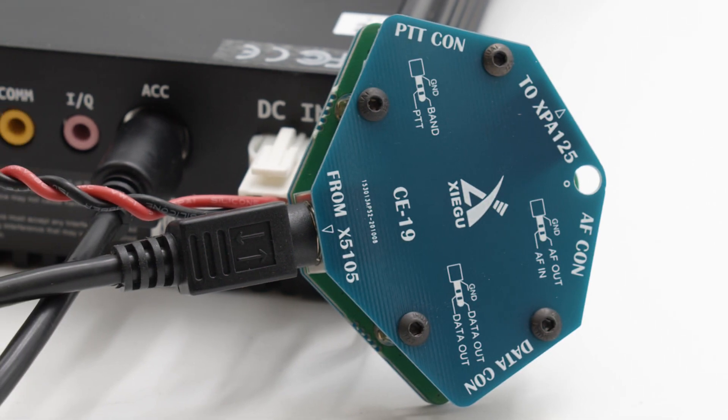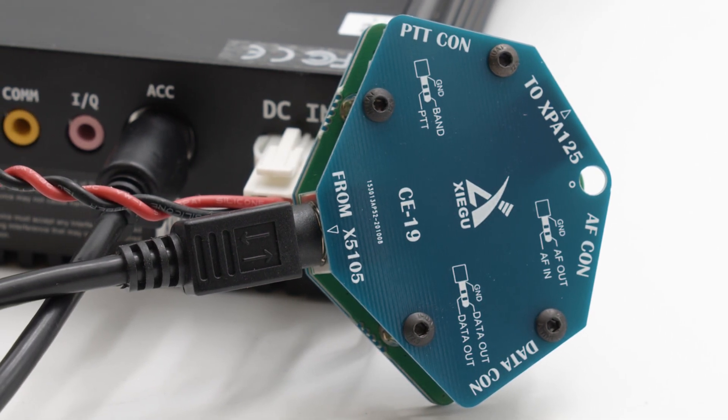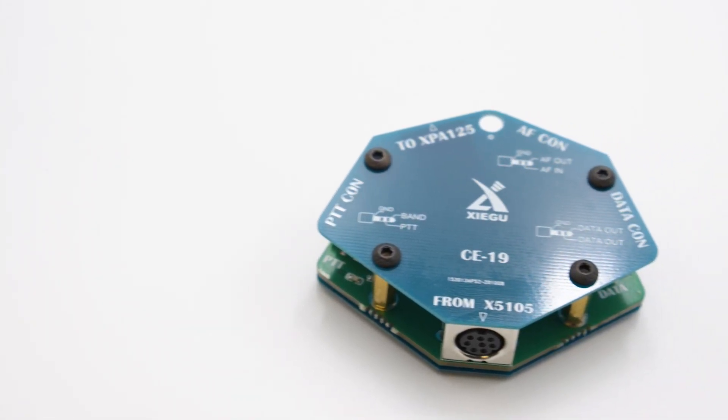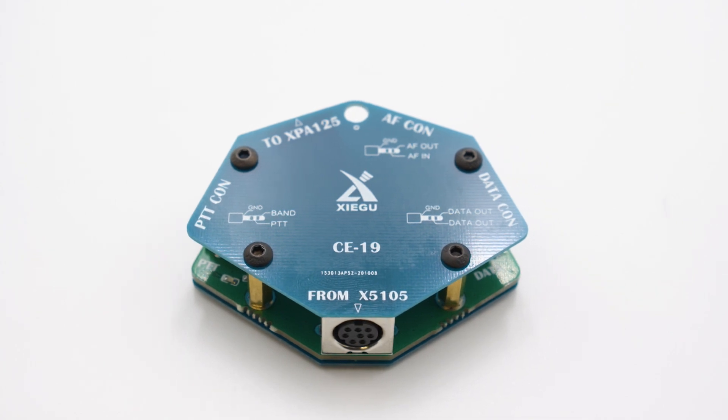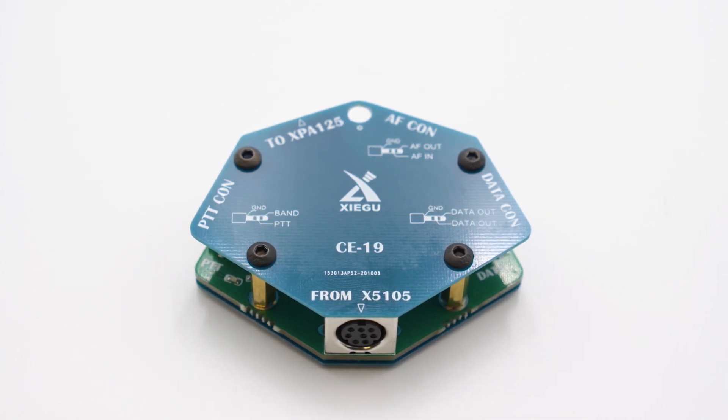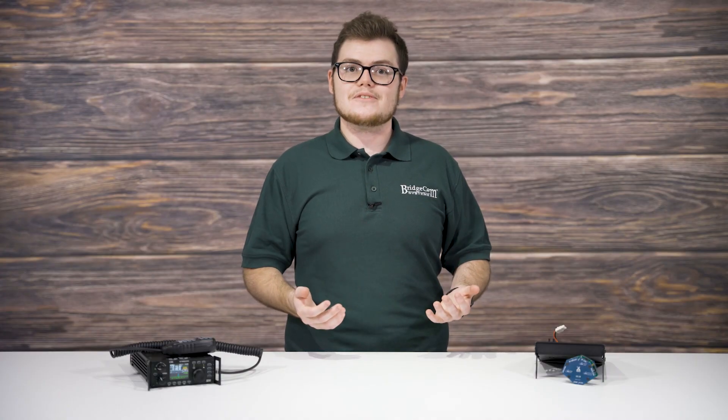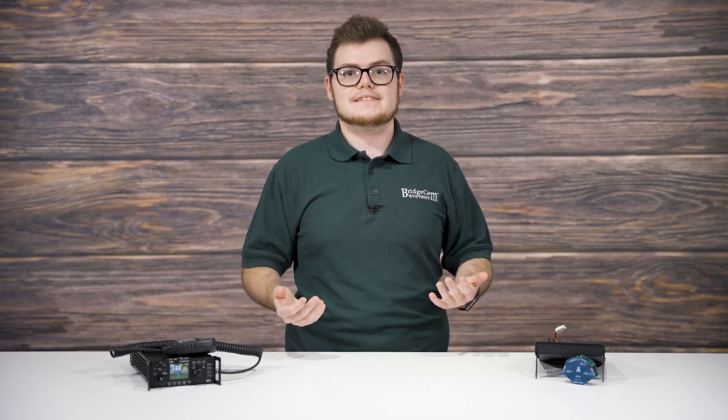This range increase is the very reason the Xiegu CE19 Data Interface expansion card is a must. The CE19 provides a straightforward path to operating your Xiegu radio on digital modes. This CE19 expansion card expands the ACC port of the shortwave transceiver. This port is convenient for radio operators to connect to their PCs or electronically powered devices.